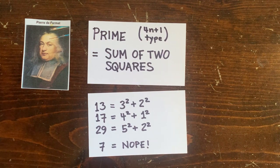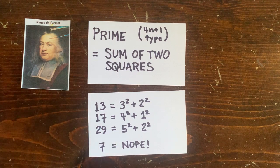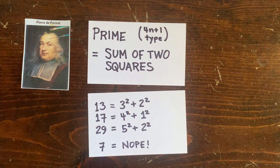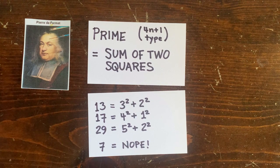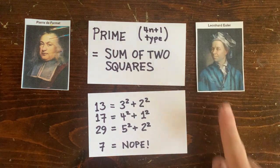Primes of the form 4n plus 3 don't work. For example, you can't write 7 as the sum of two squares. Fermat presented this as a fact, but it was really a conjecture and the proof had to wait for Euler.